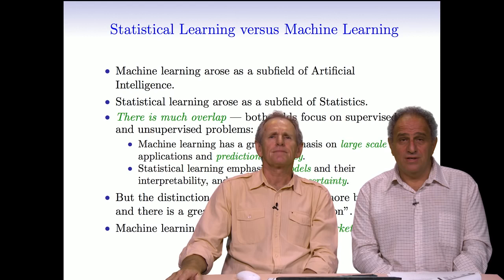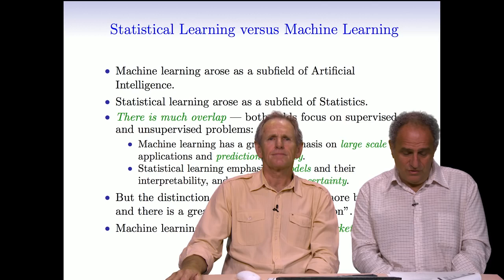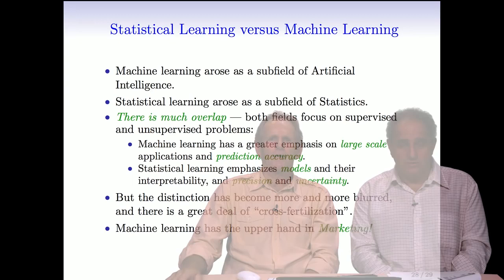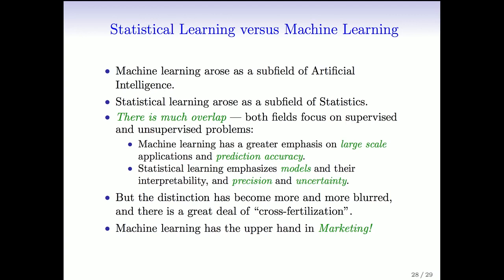Machine learning, which led to the statistical learning area we're discussing, arose as a subfield of artificial intelligence, especially with the advent of neural networks in the 1980s. It's natural to wonder about the relationship between statistical learning and machine learning. There's a lot of overlap. Machine learning tends to work at larger scales and focuses more on pure prediction performance. Statistical learning also worries about prediction, but also about interpretable models and precision and uncertainty. The distinction has become more and more blurred, and there's a lot of cross-fertilization between the methods.